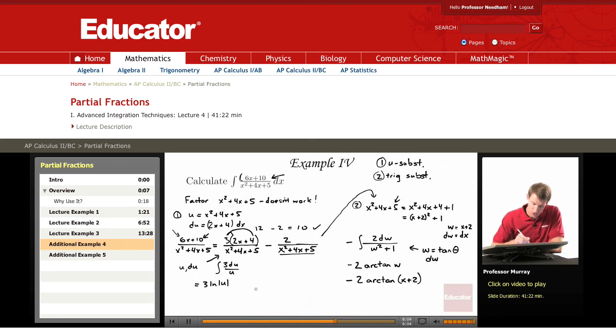That was just the answer to the second integral. We still have the first integral to combine with that. So that's 3 times the natural log of u, which was x squared plus 4x plus 5. And then we'll add on a constant as before.